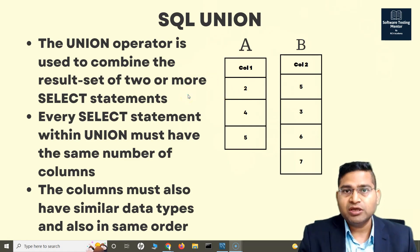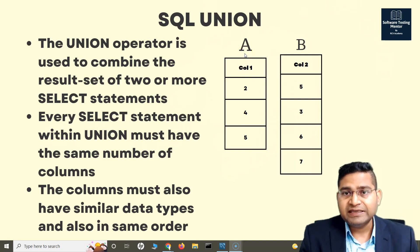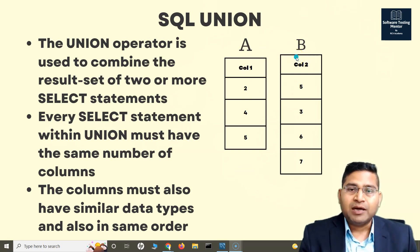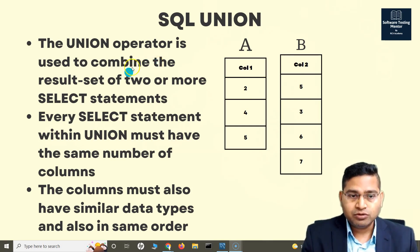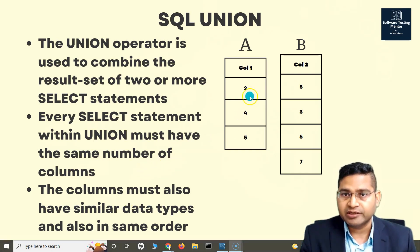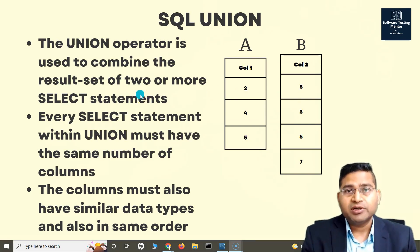One thing you have to remember with the UNION operator is that the number of columns in both the tables should be the same. So if I am combining table A and B, both tables have just one column. Apart from that, the data type of the column should also match — the columns must have similar data types and in similar order. So if both have one column with integer data type, the UNION operator will work.